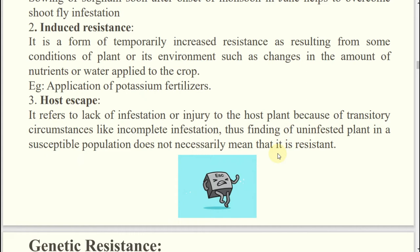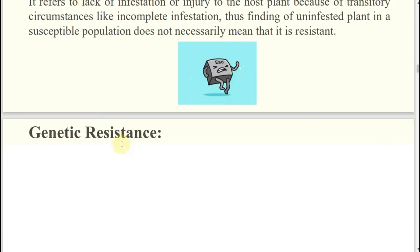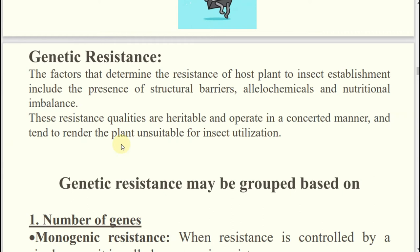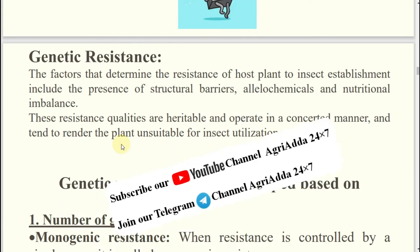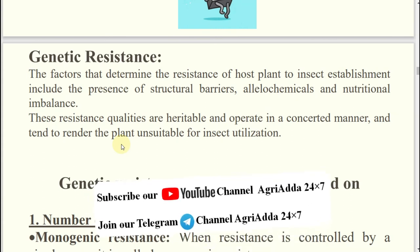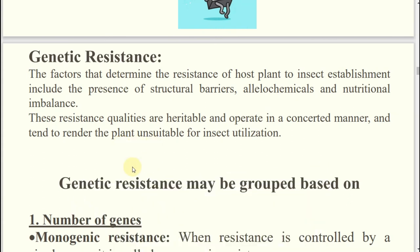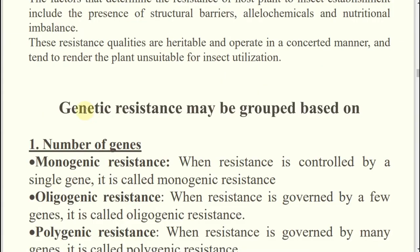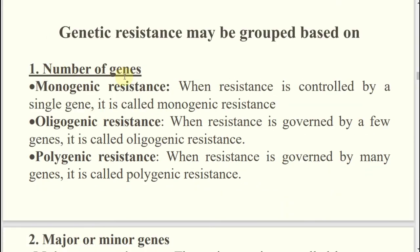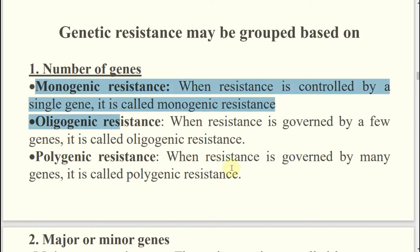All three - host evasion, induced resistance, and host escape - come under ecological resistance, which is governed by ecology, not by genetic characteristics of the plant. Genetic resistance means governed by genetics and genes - it is heritable from generation to generation. Different categories of genetic resistance based on number of genes: monogenic resistance, oligogenic resistance, and polygenic resistance.